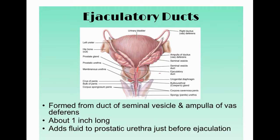The ejaculatory ducts are where the ampulla of the vas deferens and the seminal vesicle duct merge. You can also see the prostate gland nearby. This is where excess fluids are added to the sperm to form semen.